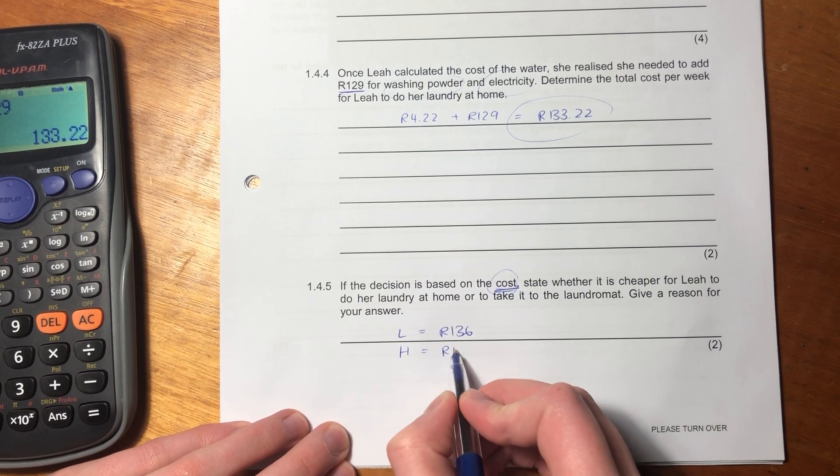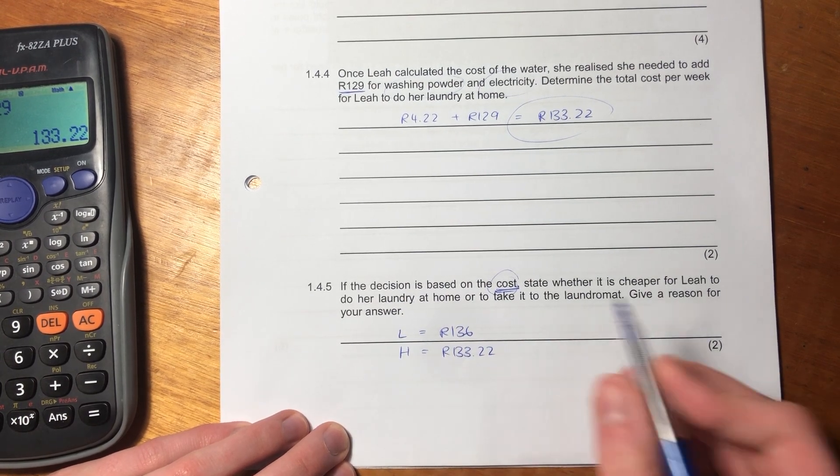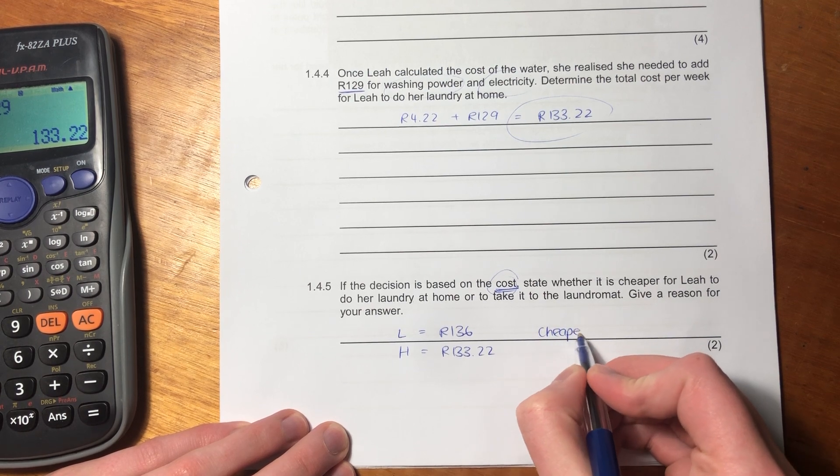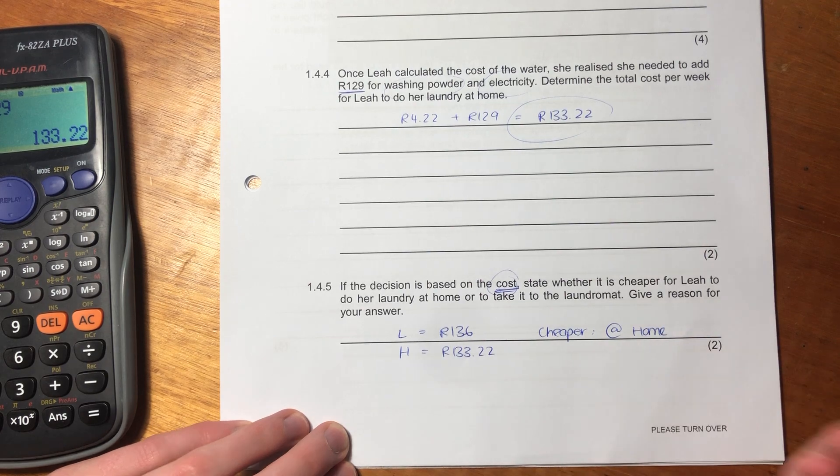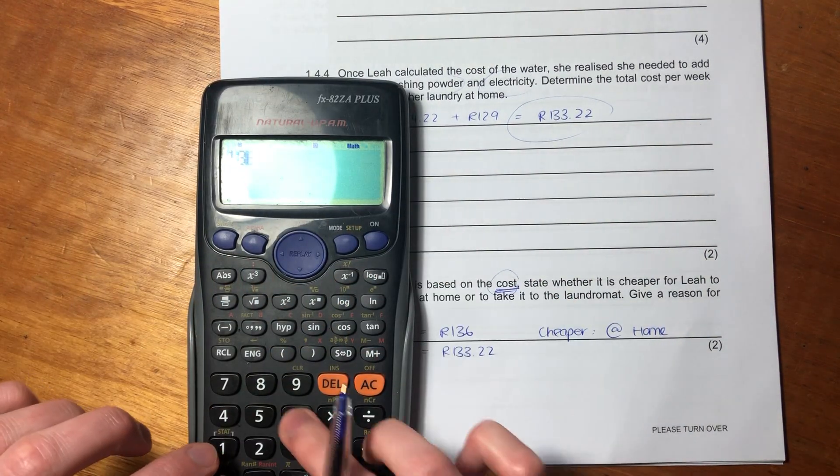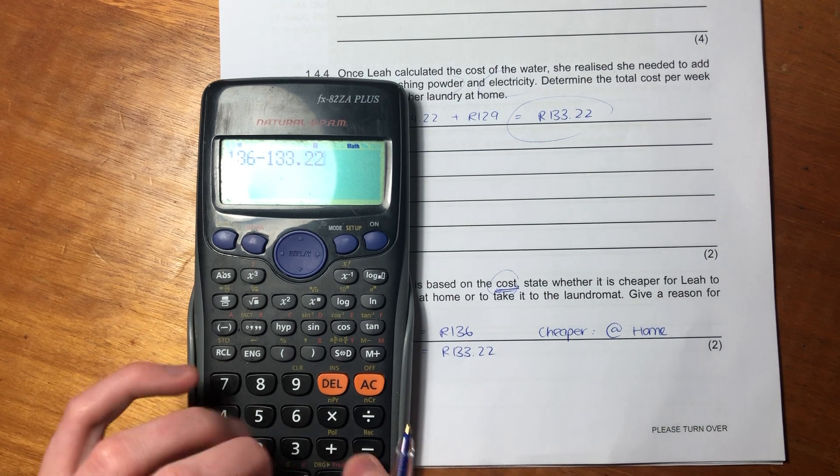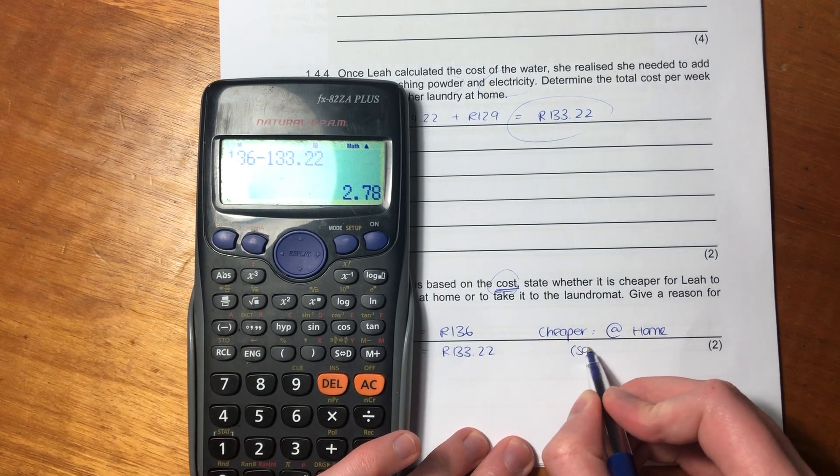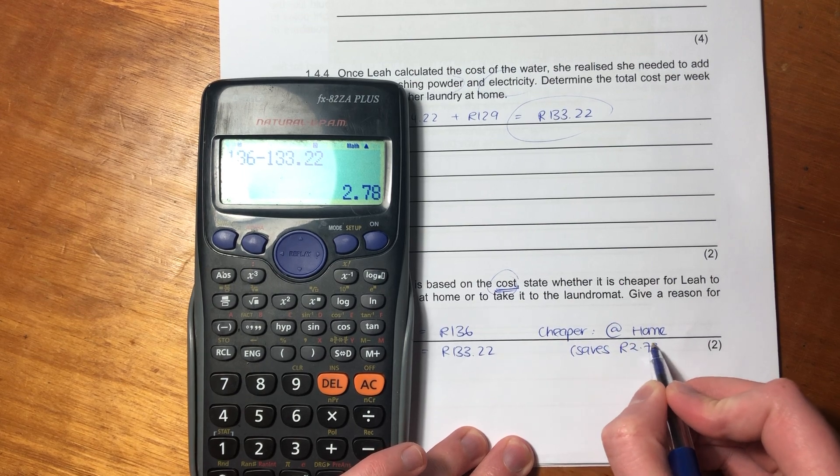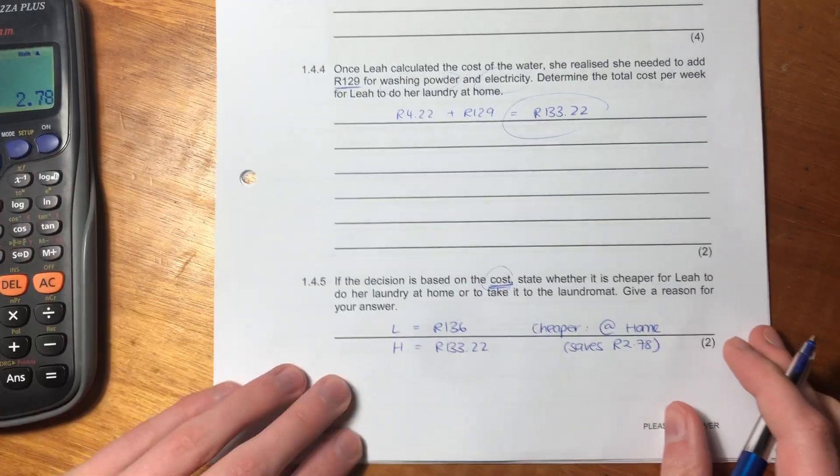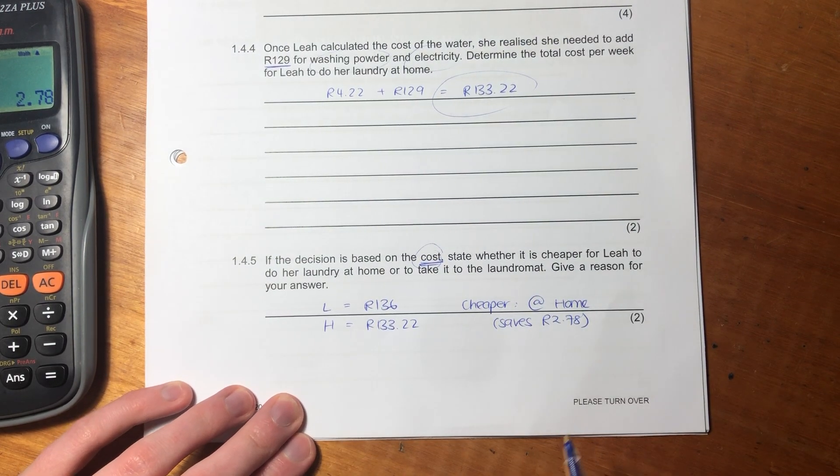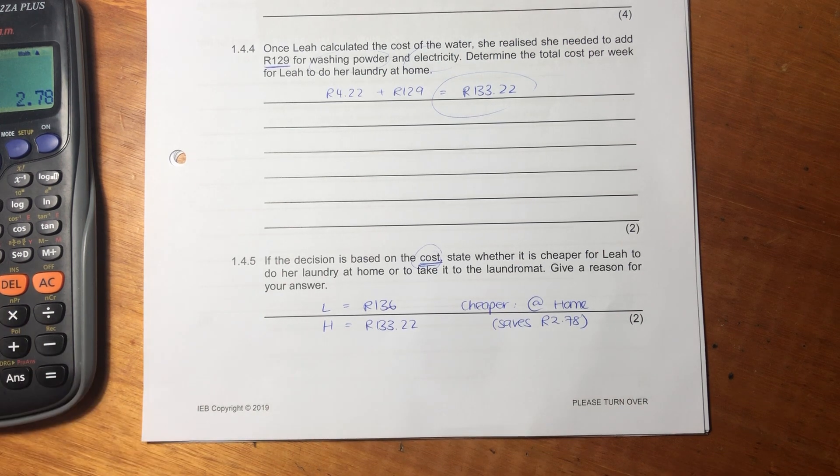The cheaper option is at home. Why is it cheaper? We'd say 136 minus 133.22. She saves 2 Rand and 78 cents, and that's your reason. That question had a lot of moving parts. There was conversion, there was tariffs, there was a lot of calculating costs and comparing costs. A great question, but sometimes can be quite overwhelming and quite confusing. Just go about it quite methodically, and you should be okay.